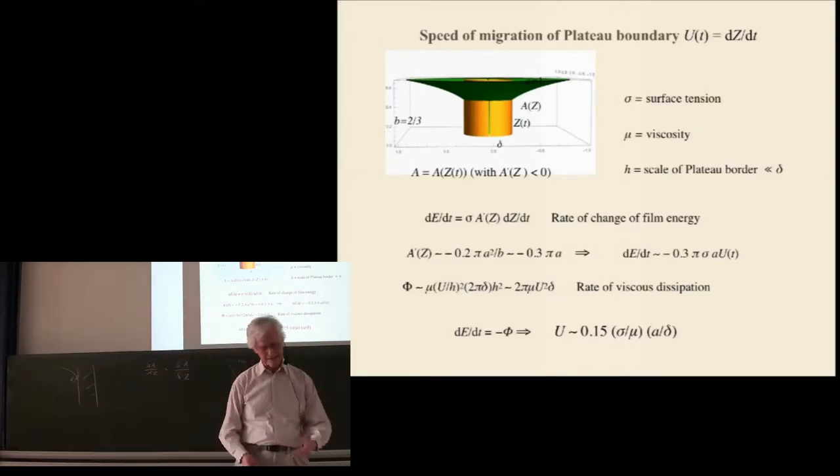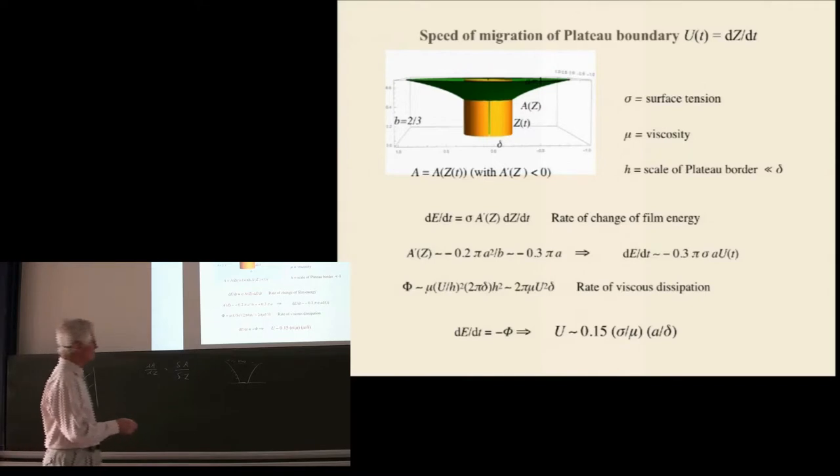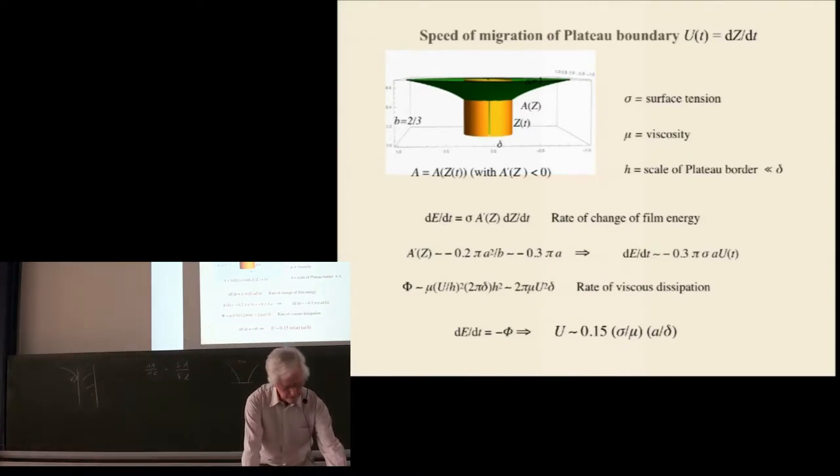So that's all we, that, this is work in progress, where Ray Goldstein right now I think is improving on this experiment in order to actually measure, get good measurements of the speed. For one thing one can easily vary is the radius of the cylinder delta, obviously, and see if at least if this formula holds. Of course that 0.15, it may turn out to be rather different.